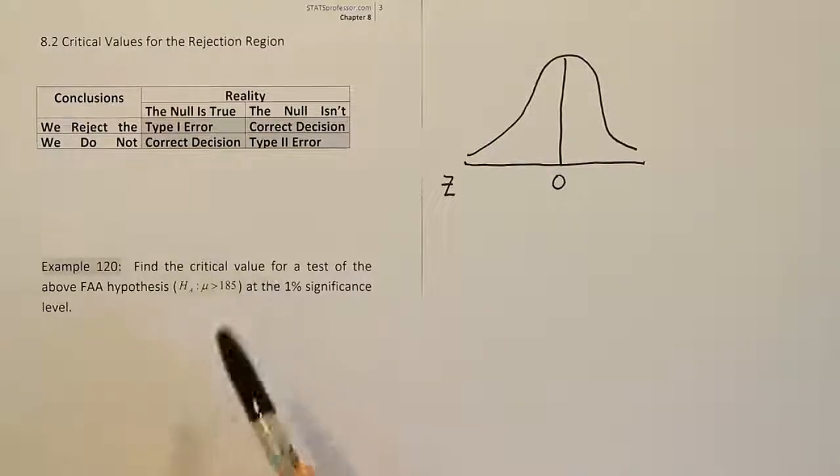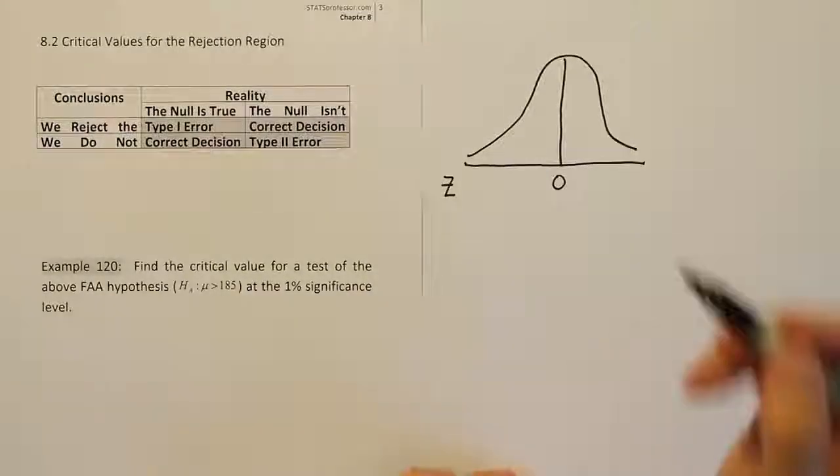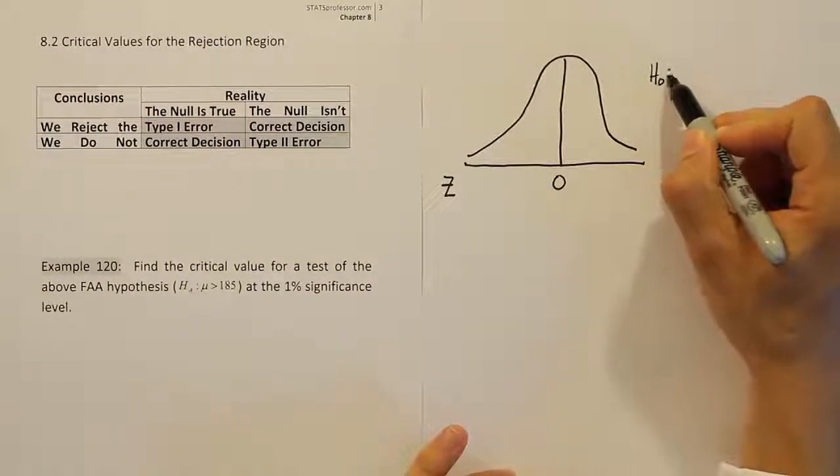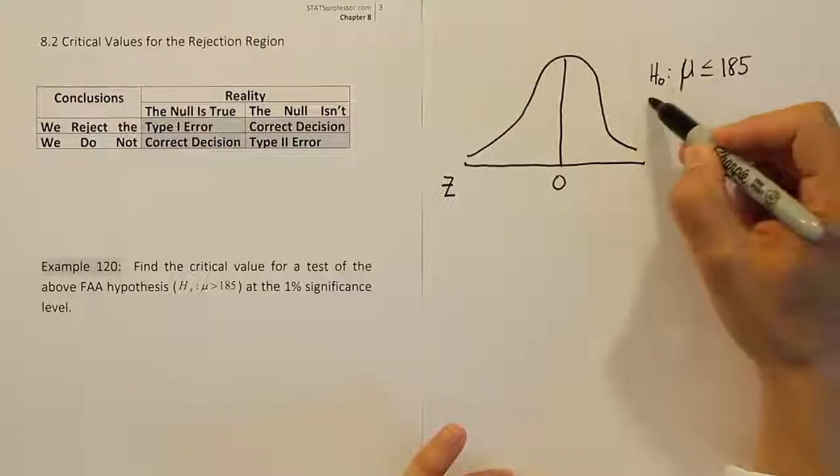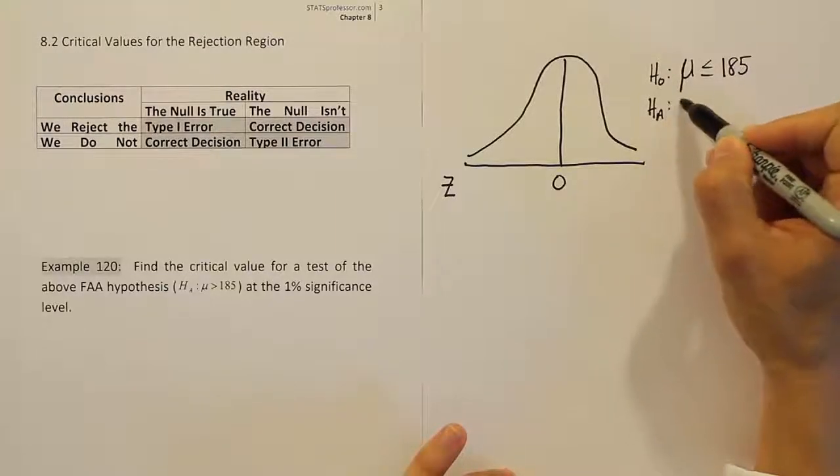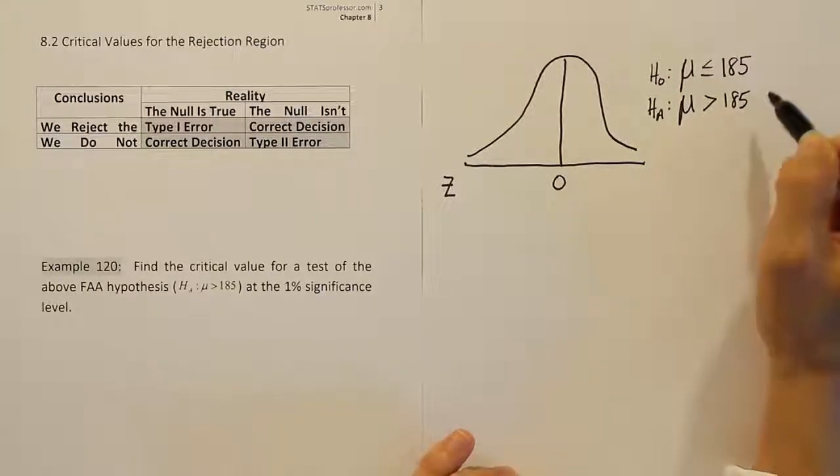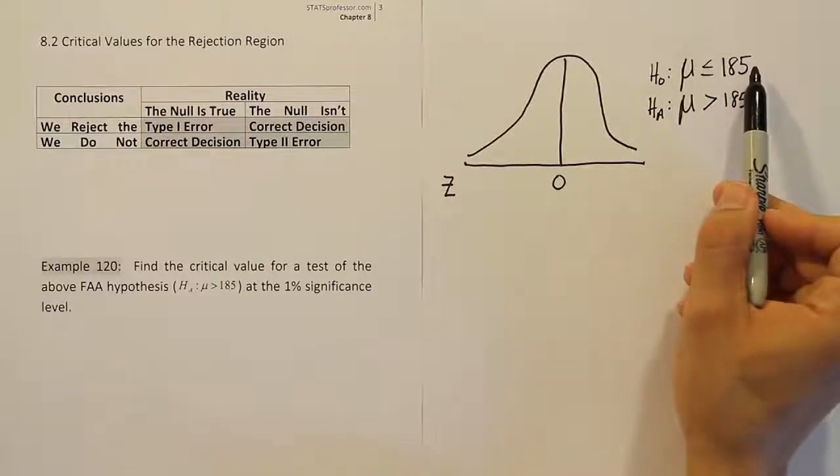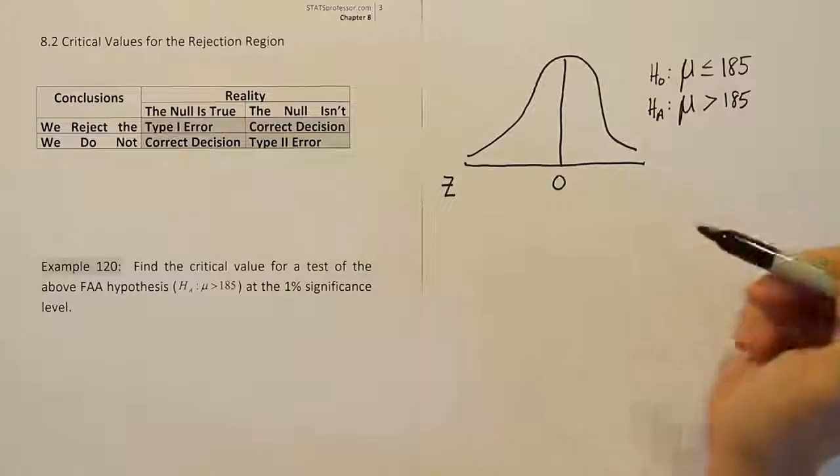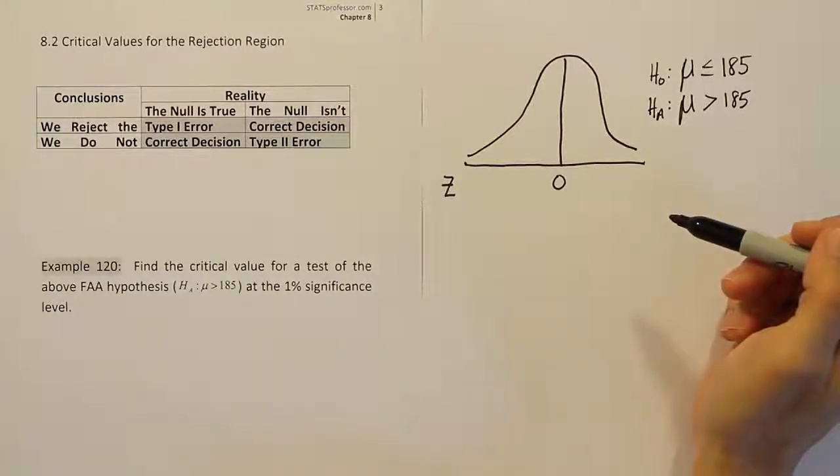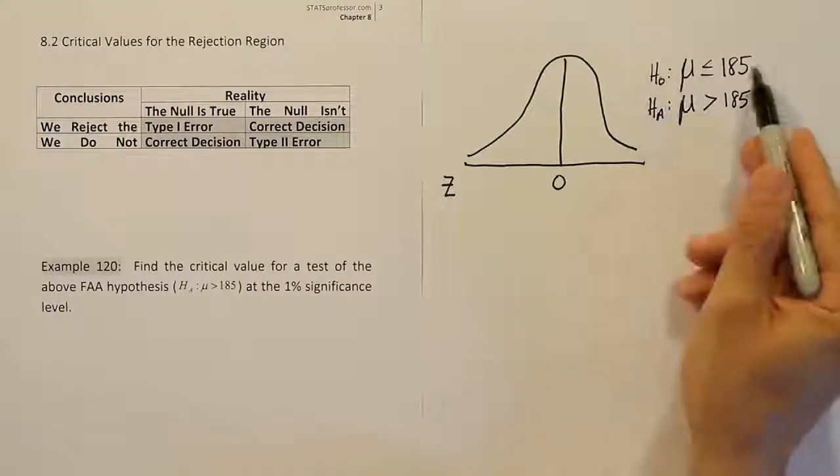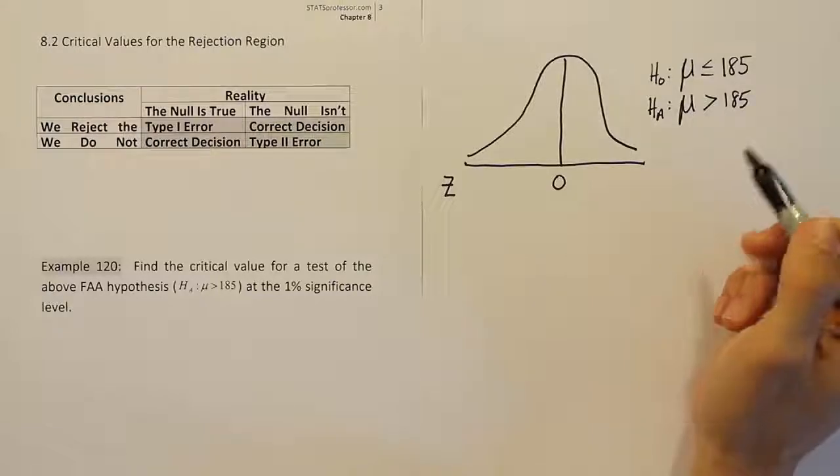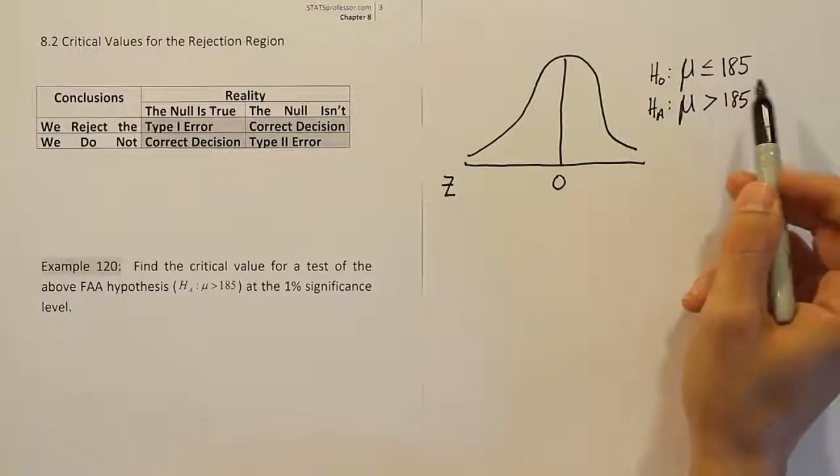The goal of the critical value is to designate the rejection region. So remember in hypothesis testing, you're always testing H0. In this problem H0 said that the mean was less than or equal to 185 pounds, and HA said that the mean was going to be greater than 185 pounds. So we're always testing H0, and the process of getting the critical value is saying what kind of test stat would cause us to reject the null hypothesis? Or in other words, what kind of data would cause us to say that H0 should not be trusted any longer?